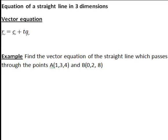Let's have a look at how we can find the equation of a straight line in three dimensions. There are three forms in which we can do this. The first is the vector equation of a straight line, which has the form r equals c plus t times a, where r is the position vector of a general point on the line, c is the position vector of a specific point on the line, t is a parameter which can take any value, and a is a vector in the direction of the line.